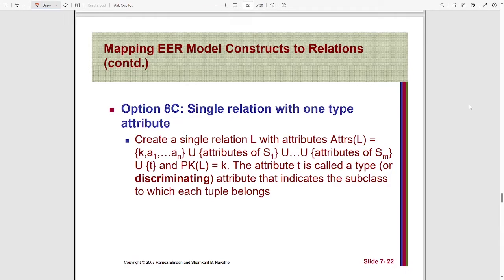In option 8C, there will be a single relation with one type attribute. We create one table where the primary key and all the attributes of the parent class and child classes are added. A new kind of attribute is introduced and added in this relation, which will be called the type attribute or discriminating attribute. This type attribute indicates the subclass to which each tuple belongs.